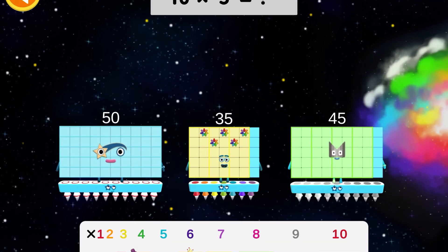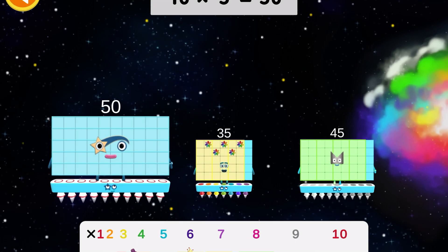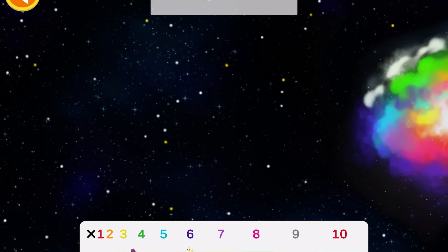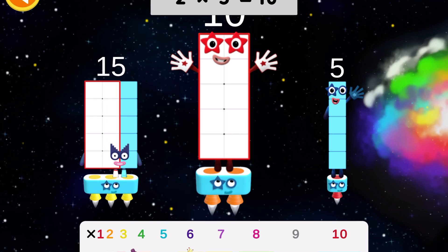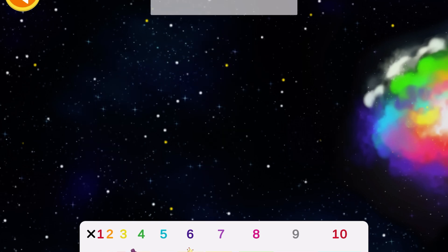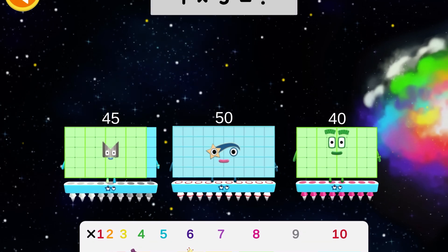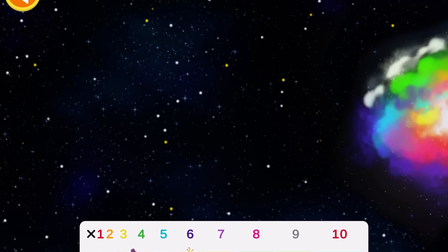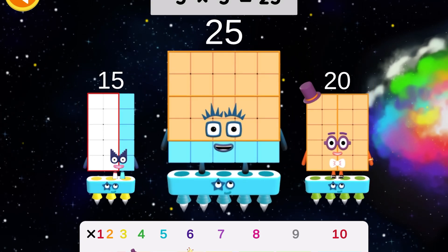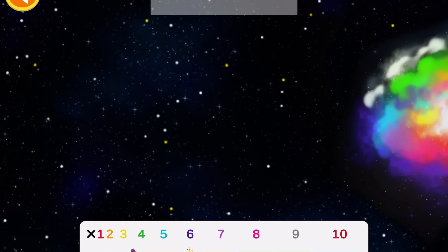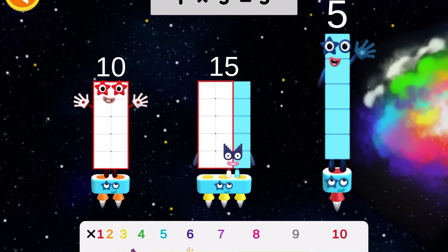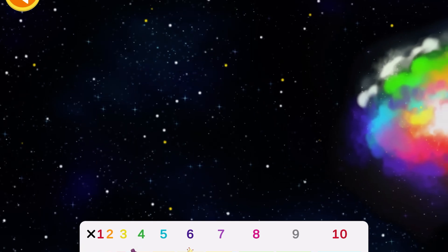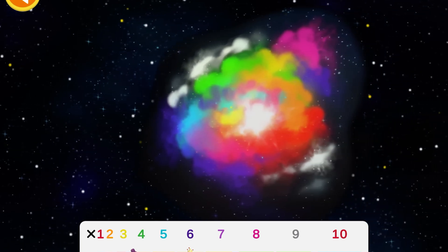10 times 5 equals 50. 2 times 5 equals 10. 9 times 5 equals 45. 5 times 5 equals 25. 1 times 5 equals 5. The hyperbooster is ready for use!